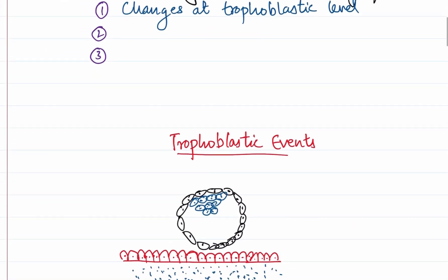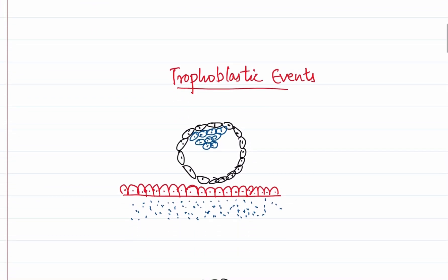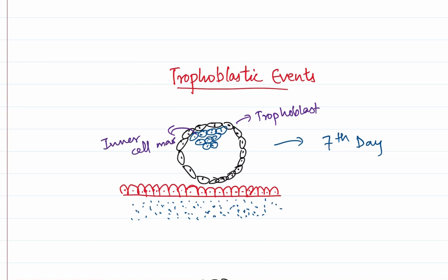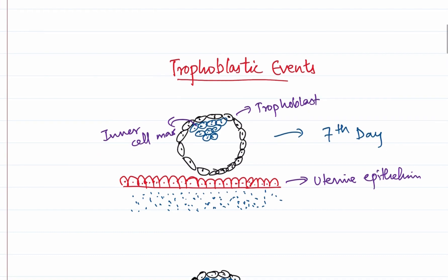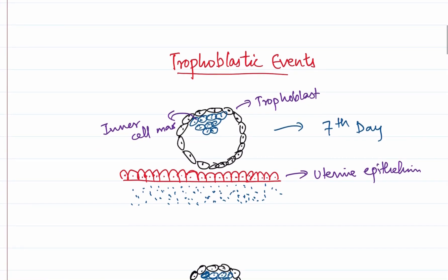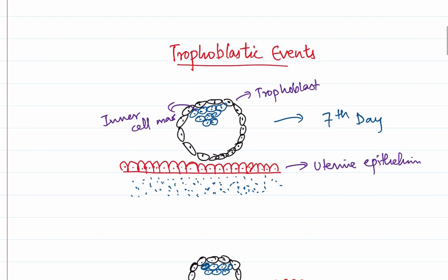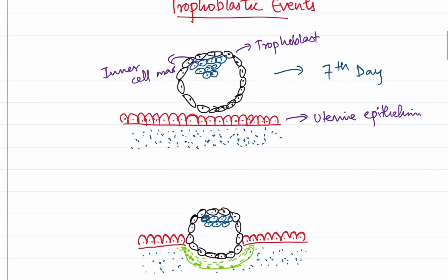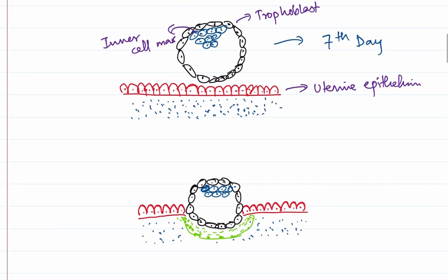At the seventh day of life, this is how the blastocyst looks — we had an outer trophoblast and an inner cell mass. This is our inner cell mass and this is the uterine epithelium or the endometrium. What happens is that the blastocyst, after the zona pellucida has been lost, will invade into the uterine endometrium, and this process is what we call implantation.